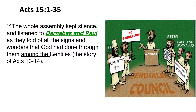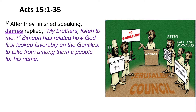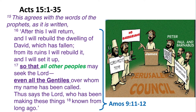The whole assembly kept silence and listened to Barnabas and Paul as they told of all the signs and wonders that God had done through them among the Gentiles — the story of Acts 13 through 14. Then James replied, 'My brothers, listen to me. Simeon has related how God first looked favorably on the Gentiles to take from among them a people for his name. This agrees with the words of the prophets.' James then reads from Amos chapter 9 verses 11 and 12: 'After this I will return and rebuild the dwelling of David which has fallen. From its ruins I will rebuild it and set it up, so that all other peoples may seek the Lord, even all the Gentiles over whom my name has been called. Thus says the Lord, who has been making these things known from long ago.'